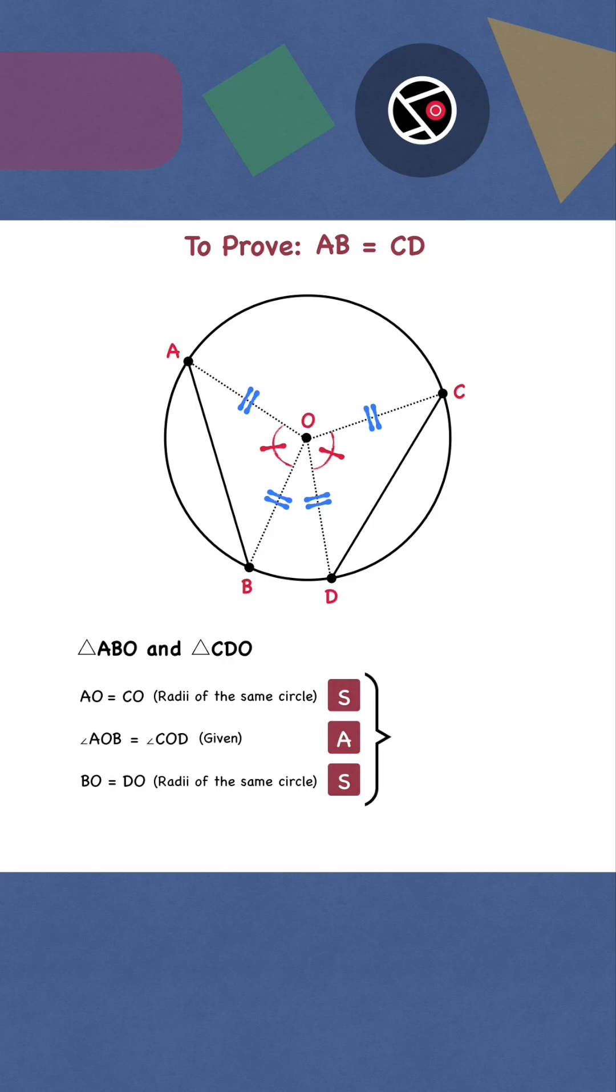So, by SAS criterion for congruence, triangle ABO is congruent to triangle CDO. Corresponding sides in congruent triangles are equal. Therefore, AB equals CD. We are done.